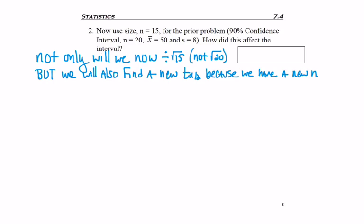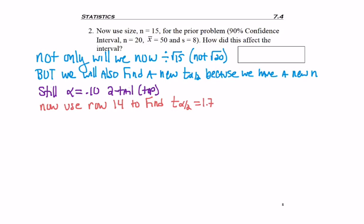To find our new critical value, we still have alpha equal to 10%, or 0.10, which we'll look at under 2-tail. Now we use row 14 to find t_(α/2) equals 1.761. Why row 14? Because our new sample size is 15, and 15 minus 1 is 14 degrees of freedom.